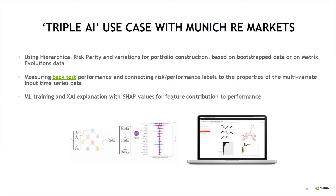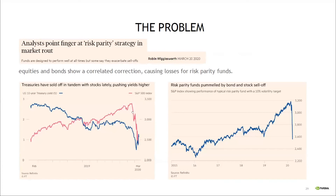This is a new workflow where explainable AI helps better understand the links. It's not really explaining causality — it's looking at feature importance. Causality is actually covered in the second talk.